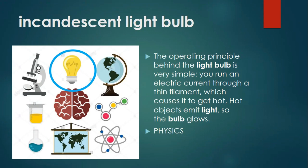Incandescent light bulb. The operating principle behind the light bulb is very simple. You run an electric current through a thin filament which causes it to get hot. Hot objects emit light, so the bulb glows. The further discussion of this will be in physics.